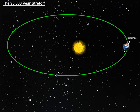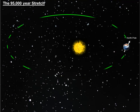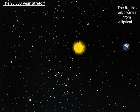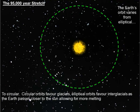Milutin Milankovitch proposed three changes to Earth's orbit as we go around the Sun that would have drastic consequences for climate on planet Earth. The first was the 95,000-year stretch — currently we've got a slightly elliptical orbit, but Milankovitch suggested that could vary from elliptical to circular. Circular orbits would favour glacials, while elliptical orbits favour interglacials as the Earth passes closer to the Sun, allowing more melting.